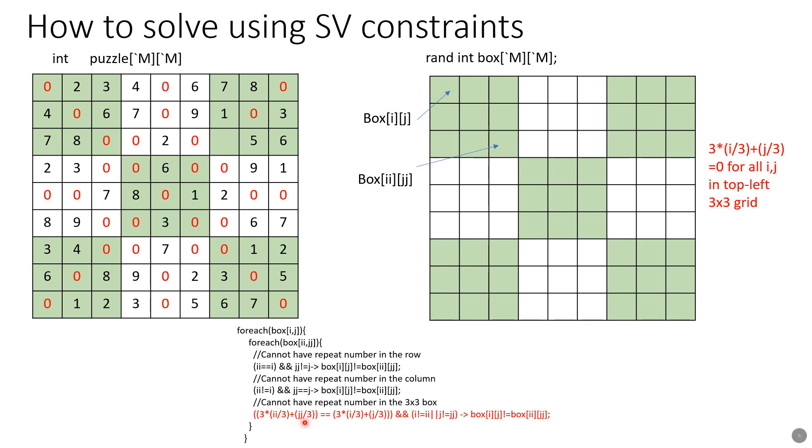If this condition is satisfied, that means the boxes are in the same 3 by 3 grid. But we have to make sure that these box[i][j] and box[ii][jj] do not refer to the same element, and that is done by this latter part where we make sure that i not equal to ii or j not equal to jj, meaning at least the row or the column are different. But if they're in the same grid, that means their box values must be distinct. So that's the last constraint.